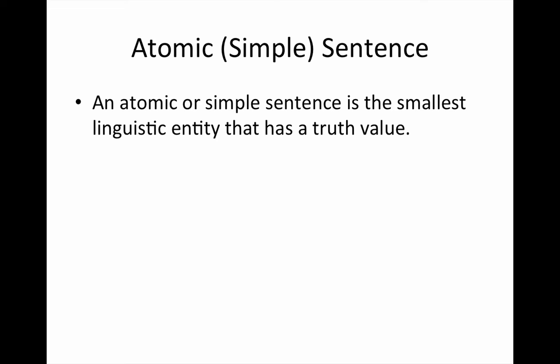An atomic or simple sentence is the smallest linguistic entity that has a truth value. What does that mean? Well, let's consider the sentence 'Joe sits.' You have a grammatical subject and a grammatical predicate. If you simply say 'Joe,' one might think you're calling out to Joe. If you simply say 'sits,' one will probably not know what you're talking about because you're asserting a verb without a subject. So by themselves, the word 'Joe' and the word 'sits' do not constitute a sentence. Together, however, 'Joe sits' does.